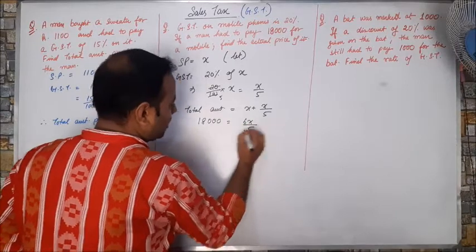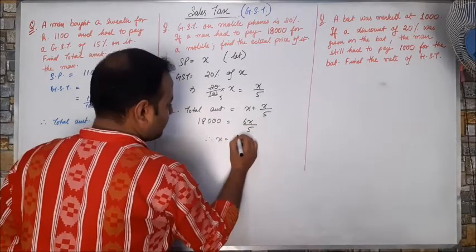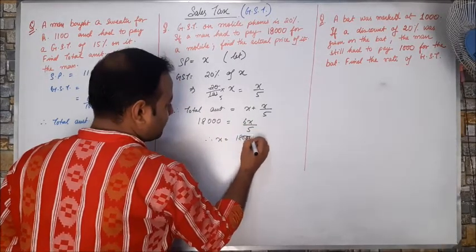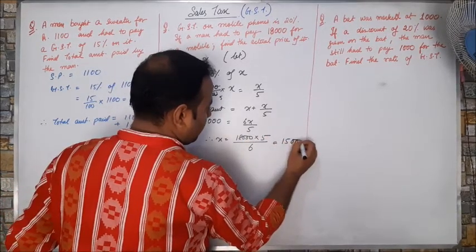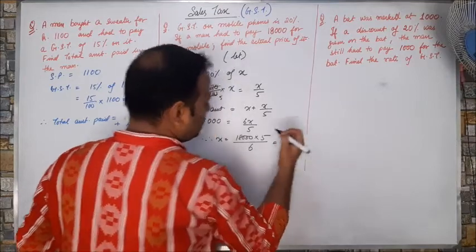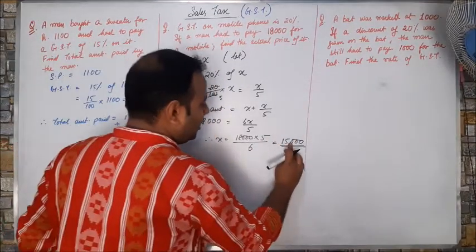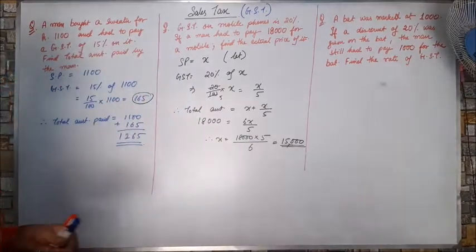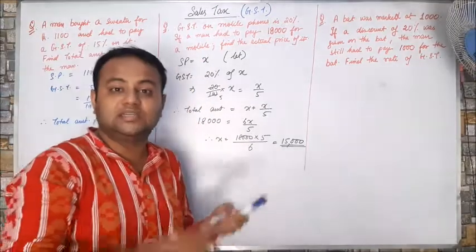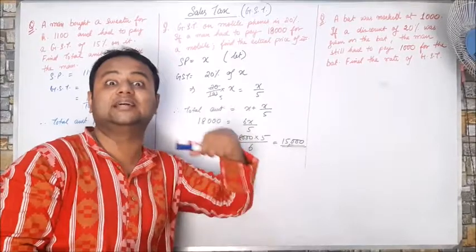The total amount is given as 18,000. Solving this, I get 6X by 5 equals 18,000. So X equals 15,000. This is the actual price of the mobile phone. 15,000 rupees. But he had to pay 18,000. Means that 3,000 rupees he had to pay as a tax to the government.